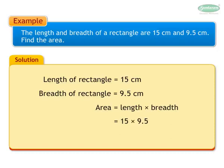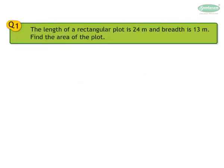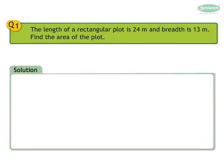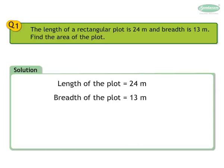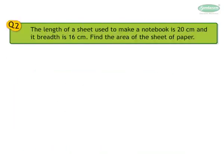Area is equal to length into breadth, equals 15 into 9.5, equals 142.5 square centimeters. Let us solve Exercise 8.3. The length of a rectangular plot is 24 meters and breadth is 13 meters. Find the area of the plot. Length of the plot is 24 meters, breadth is 13 meters. Area equals 24 into 13, equals 312 square meters.